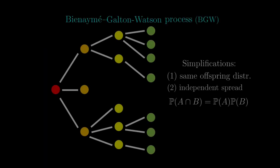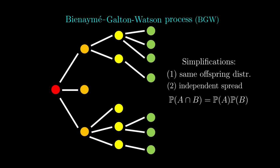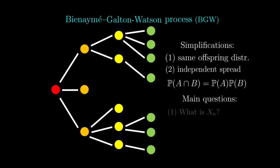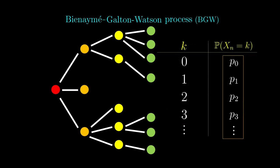Going back to the BGW model, the two questions that we want to ask is what is the number of individuals in the nth generation? But because this is a random process, it can be 0, 1, and so on, so actually what we are looking for should be the distribution of Xn, detailing the probabilities of the different values of Xn.